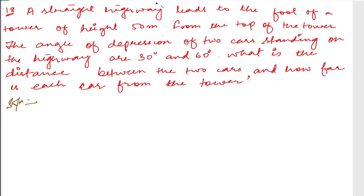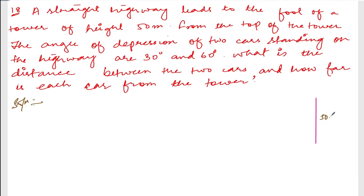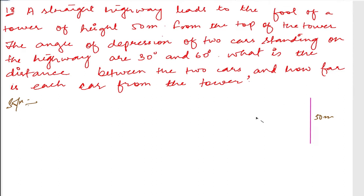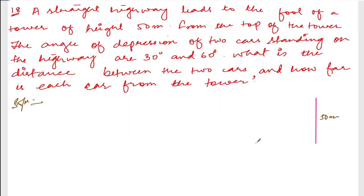The question says a straight highway leads to the foot of a tower of height 50 meters. There is a tower and the height of this tower is 50 meters. From the top of the tower, the angle of depression of two cars standing on the highway are 30 and 60 degrees. So there are two cars — this is one car and this is another car on the highway.